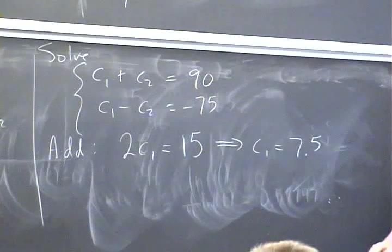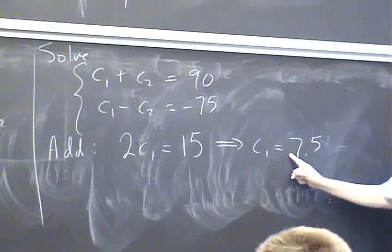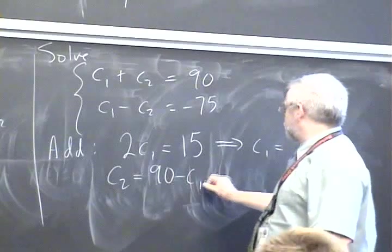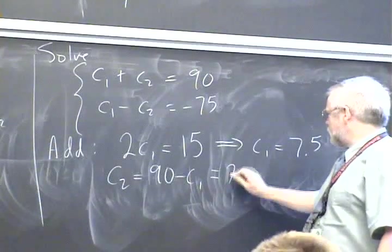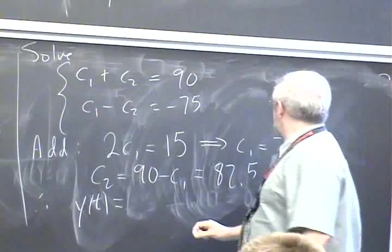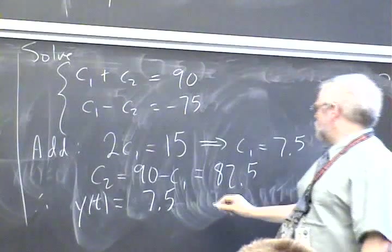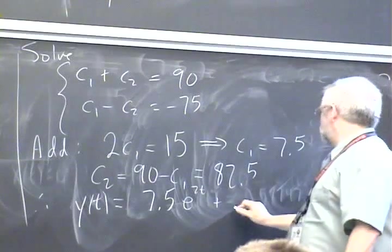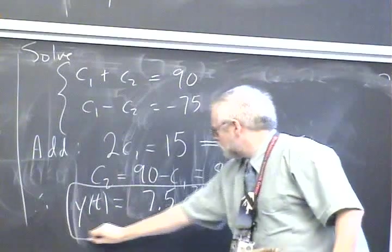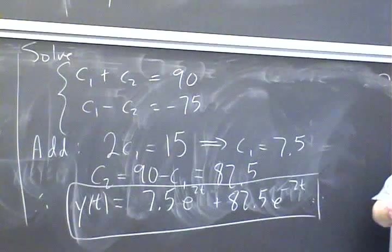Now if we know c₁, we can solve for c₂ using the first equation: c₂ = 90 - c₁, which is 82.5. Therefore Y(t) = 7.5e^(2t) + 82.5e^(-2t). That is, I believe, the same as what we had before.